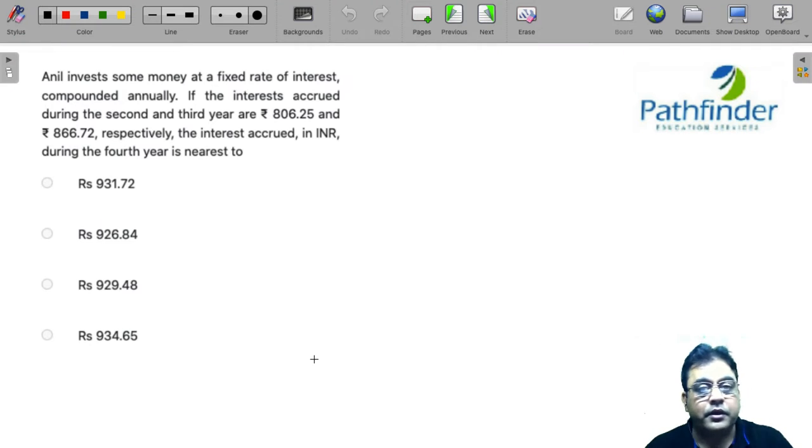CAT 2021 slot 1 quantitative aptitude question number 9. Anil invests some money at a fixed rate of interest compounded annually. If the interests accrued during the second and third year are 806.25 and 866.72 respectively, the interest accrued in INR during the fourth year is nearest to.